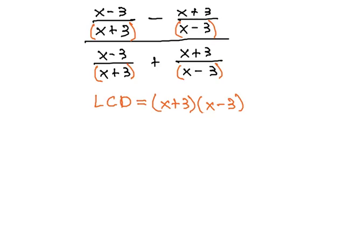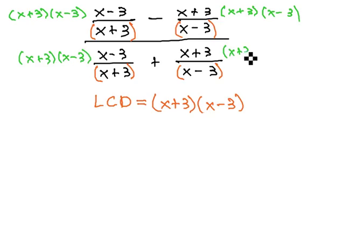We will then multiply each term in both the numerator and denominator by (x+3)(x-3). We'll do it on top as we do this: (x+3)(x-3) times each term.